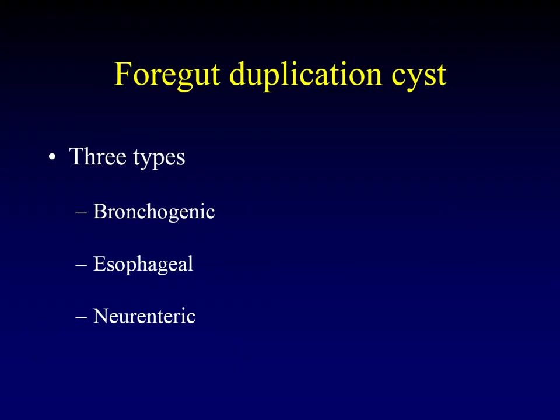Foregut duplication cysts: what are they? They are a type of choristoma — histologically normal tissue in an aberrant location. There are three different types, distinguishable by location. Bronchogenic duplication cysts occur in characteristic locations within the mediastinum. Esophageal duplication cysts lie alongside the esophagus itself. Neuroenteric duplication cysts occur in the posterior mediastinum adjacent to the spinal column.